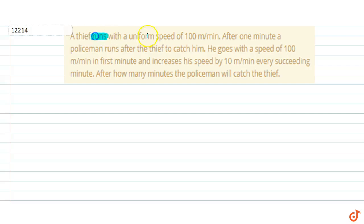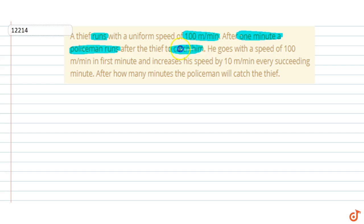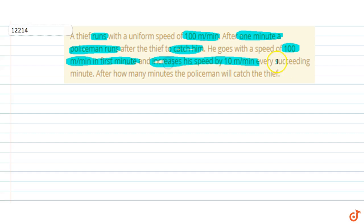A thief runs with a uniform speed of 100 meters per minute. After one minute, a policeman runs after the thief to catch him. The policeman goes with a speed of 100 meters per minute in the first minute and increases his speed by 10 meters per minute every succeeding minute.